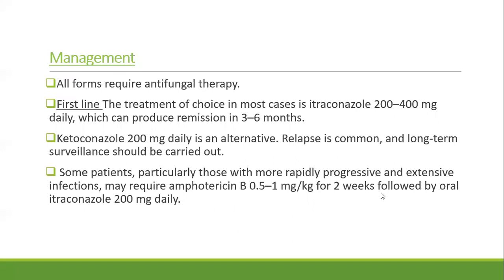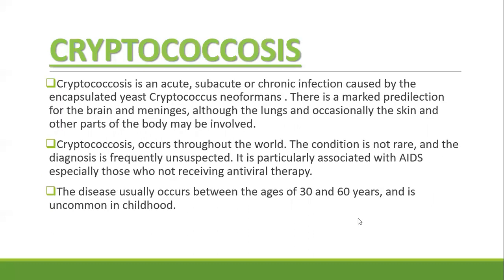All forms require antifungal therapy. First-line treatment of choice is itraconazole 200 to 400 mg, producing remission in three to six months. Ketoconazole 200 mg daily is an alternate; relapse is common and long-term surveillance should be carried out. Some patients with rapidly progressive or extensive infection require amphotericin B 0.5 to 1 mg/kg for two weeks, followed by oral itraconazole 200 mg orally until the disease is cured.